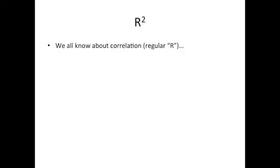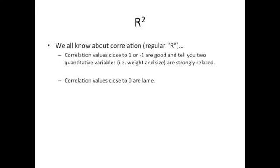Most of us are already familiar with correlation and the standard metric of it, plain old R. Correlation values that are close to 1 or negative 1 are good and tell you that two quantitative variables, for example weight and size, are strongly related. Correlation values close to 0 are lame.